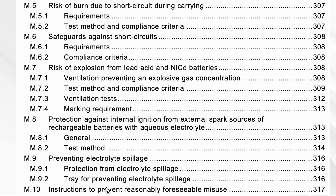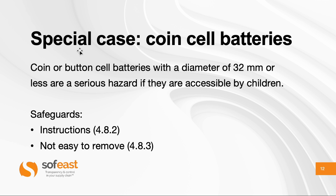Annex M also covers preventing spillage of electrolyte and how to address forcible misuse, such as inserting the battery into a charger with reverse polarity, and how to prevent that. Finally, there is a special case for coin cell batteries: if they are very small, can be removed, can be accessed by children, and are 32 millimeters or less in diameter, this is a serious hazard — they can be ingested and can cause injury very fast.